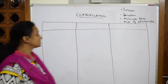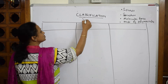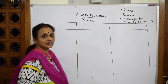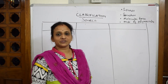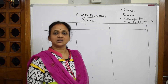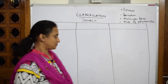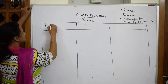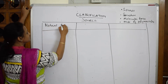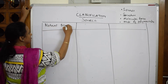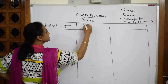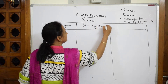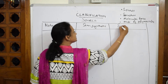Starting with classification based on source: polymers are first classified into natural polymers, next semi-synthetic polymers, and next synthetic polymers.